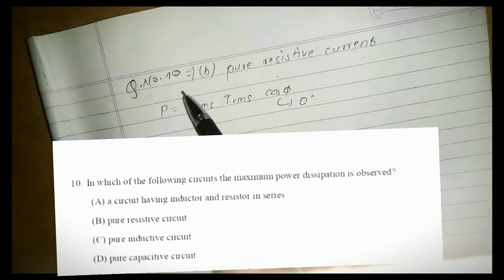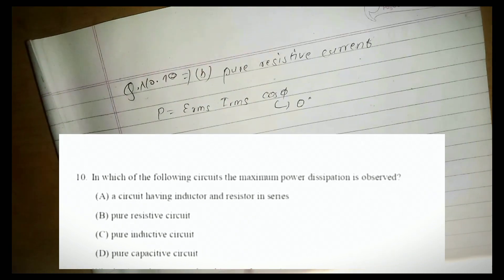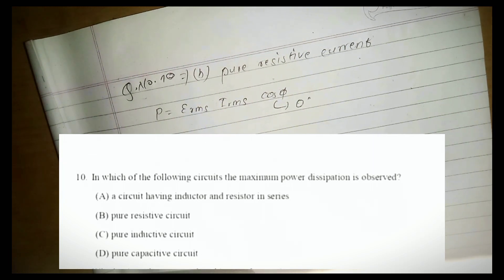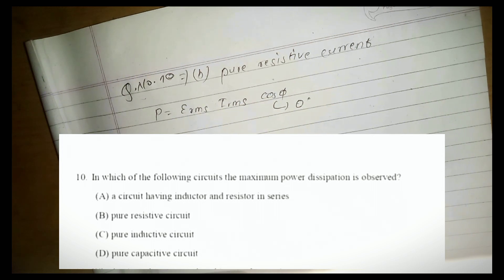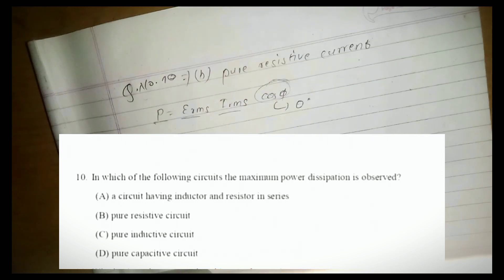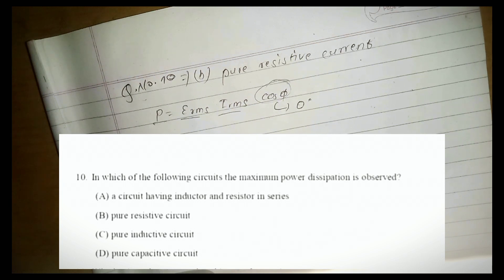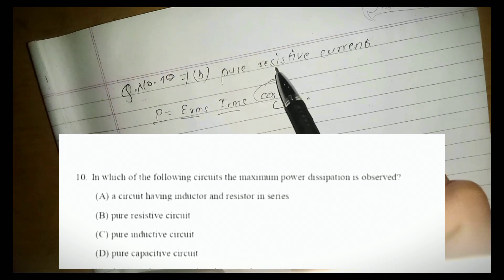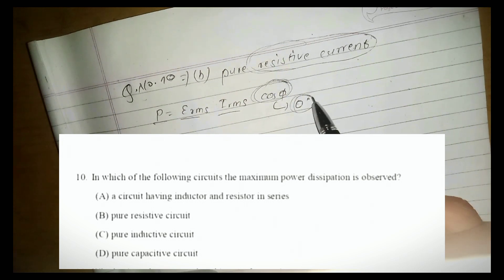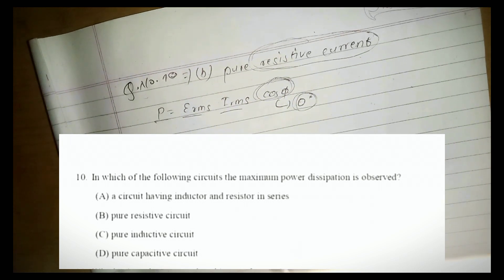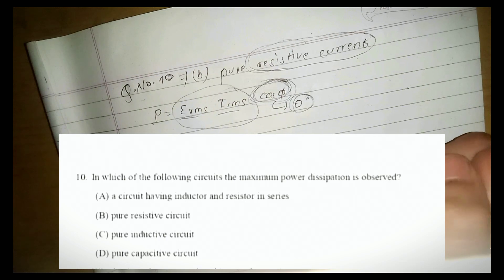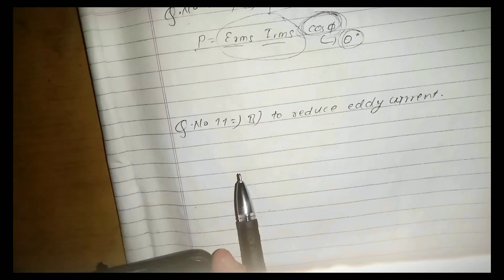Question number ten: which of the following circuits has maximum power dissipation? Power dissipation P = V_rms × I_rms × cos φ. For maximum power dissipation, cos φ must be maximum — that is cos 0° = 1 — which occurs in a pure resistive circuit.